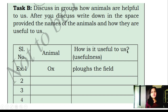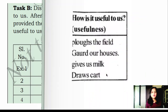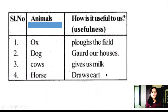Task B: Discuss in the group how animals are helpful to us. After you discuss, write in the space provided the names of the animals and how they are helpful to us. One is done for you. Ox ploughs the field. Dog guards our house. Cow gives us milk. Horse draws the cart.